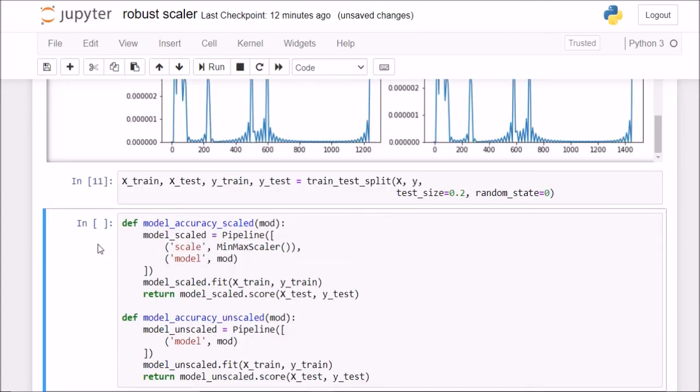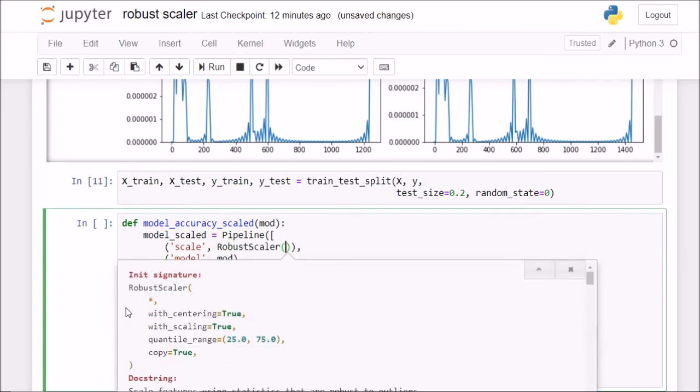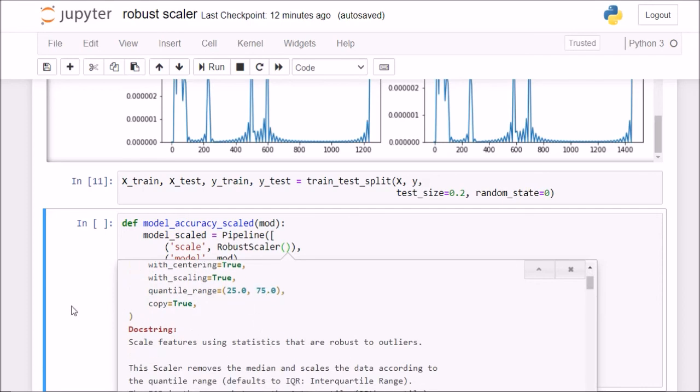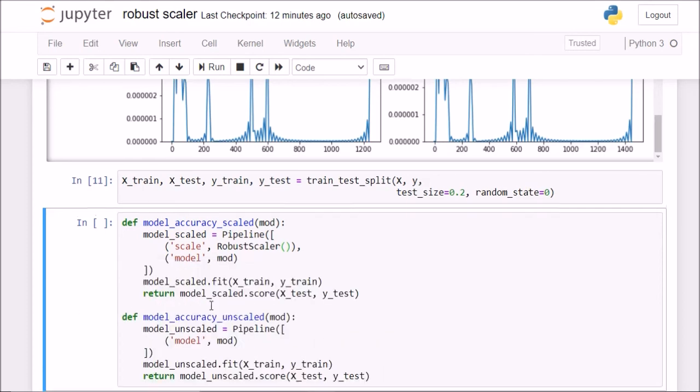Now if I do my x train, y train. Now instead of MinMaxScaler, if I check, RobustScaler. Now if I check my RobustScaler, it tells me that whether I want with centering true and with scaling equal to true. So with centering means whether I want to subtract the median value from each observation. And with scaling implies whether I want to scale the values from the interquantile range. Now I can also change this interquantile range from 25-75 to maybe 30-70 or 20-80. It is my choice. But I'll just keep this the default values.